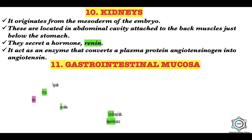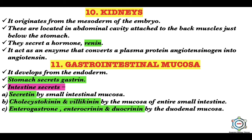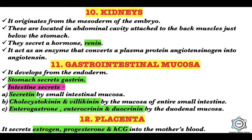The eleventh endocrine gland is the gastrointestinal mucosa. It develops from the endoderm. The stomach secretes gastrin, which stimulates the gastric glands to produce gastric juice and stomach movements. The small intestinal mucosa secretes secretin and cholecystokinin; the mucosa of the entire small intestine secretes villikinin; and the duodenal mucosa secretes enterogastrone, enterocrinin, and duocrinin. The twelfth is the placenta, which secretes estrogen, progesterone, and human chorionic gonadotropin (HCG) into the mother's blood. HCG stimulates the corpus luteum in the mother's ovary to enlarge and secrete progesterone during pregnancy.